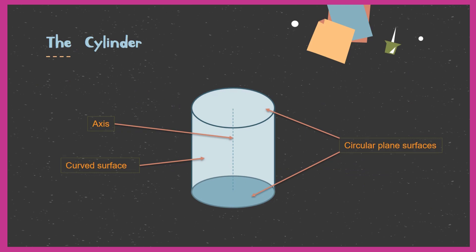If you see the slide, you will see there is a cylinder with two circles — one on top and one at the bottom. This cylinder consists of two circles, one at the top and one at the bottom, and there is a circular part called the curved surface area around it. These are the three parts of a cylinder.